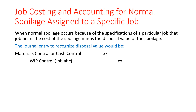When normal spoilage occurs because of the specifications of a particular job, that job bears the cost of the spoilage minus the disposal value of the spoilage. The journal entry to recognize disposal value would be materials control or cash control on the debit side, and work in process on the credit side.